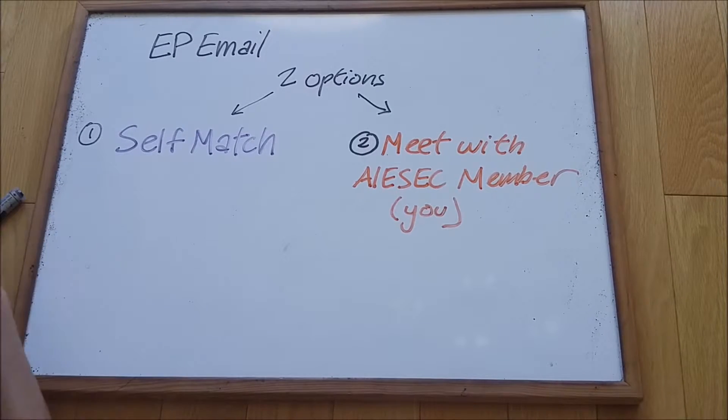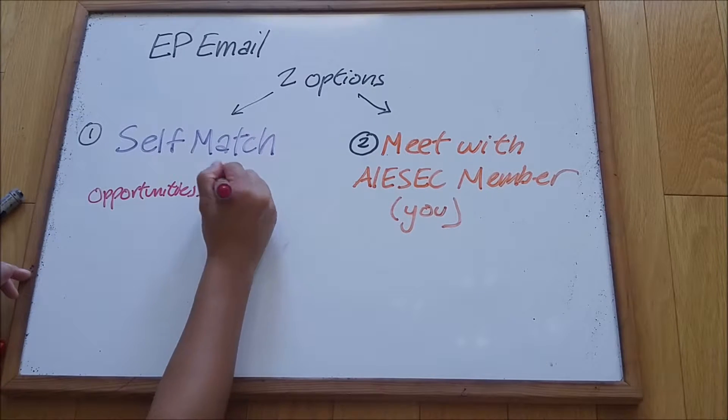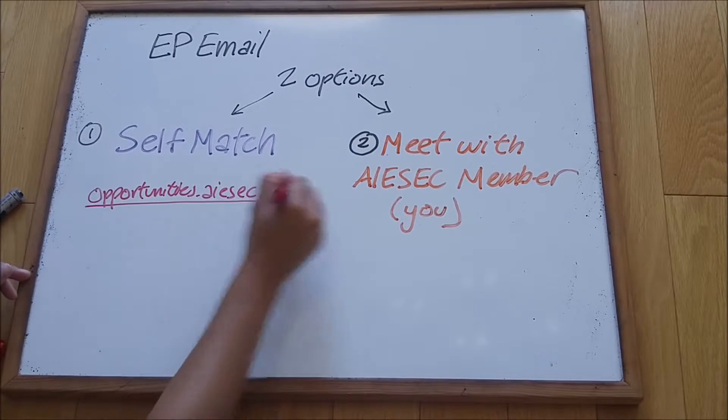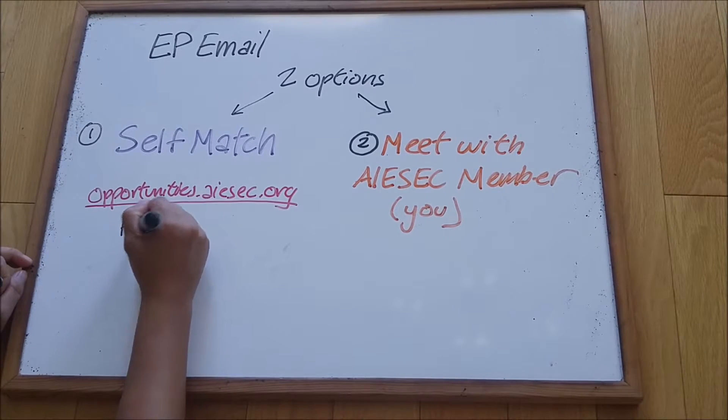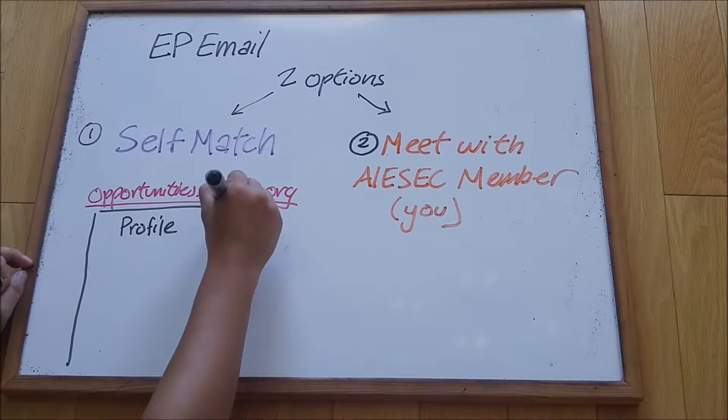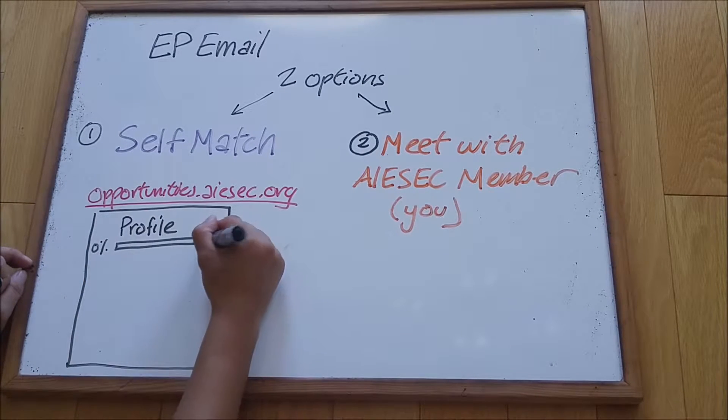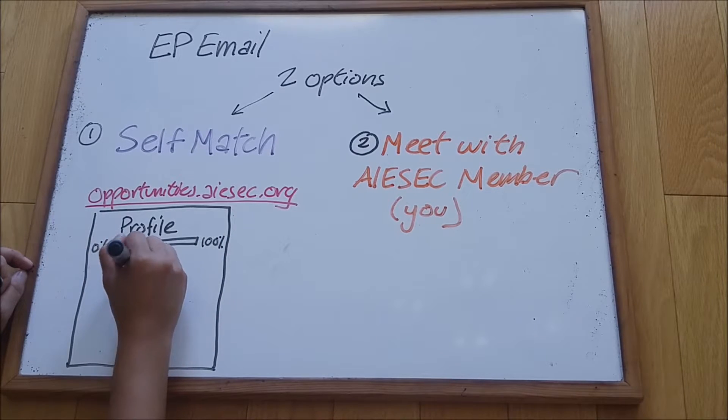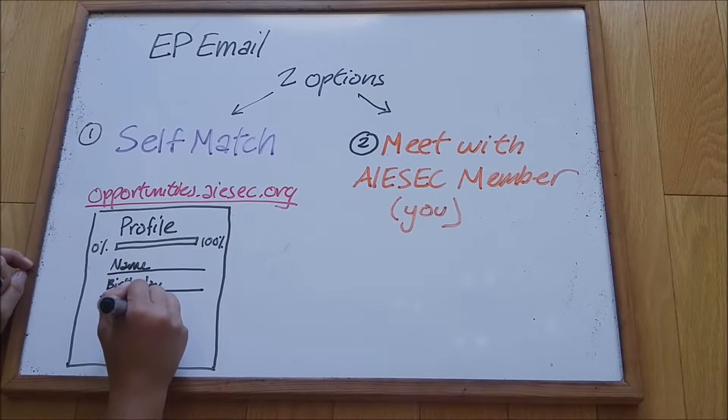Your two options are to either one, self-match, which prompts them to make an account on expa, which is now known as the open stage, so that's opportunities.aiesec.org. You get the gist of expa - you fill in your profile with your first name, your last name, your birth date, and any skills that you have.